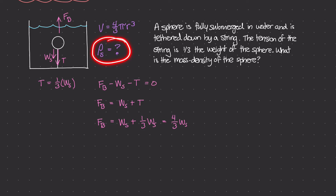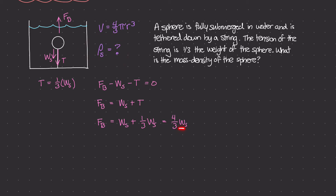This question is asking for the mass density of the sphere. So we need to rewrite these terms to get mass density into the equation. Let's look at W sub s first — the weight of the sphere equals mass times gravity. And from previous videos, mass equals mass density times volume, so W sub s equals rho sub s times V sub s times g.